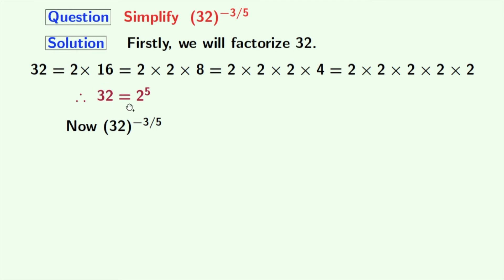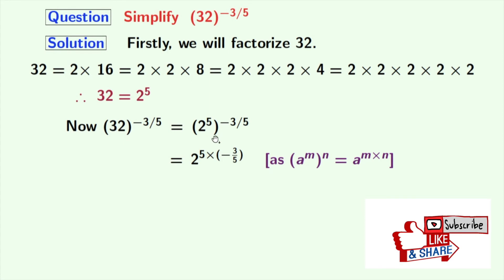Using this fact we can express it as 2 power 5 whole power minus 3 by 5. Now we will rewrite this as 2 power 5 times minus 3 by 5. Here we have used the rule of a power m whole power n. Here a is 2, m is 5, and n is minus 3 by 5.